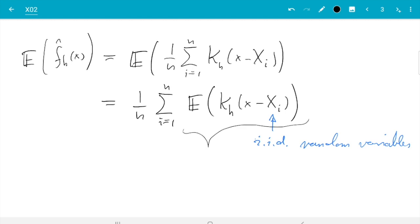So each of these expectations equals expectation of k_h(x minus X1). Say I could have picked any, just picking X1 because it's the first, but the point is this does not really depend on i. They are all the same and I can just write any of them here and this will not matter.